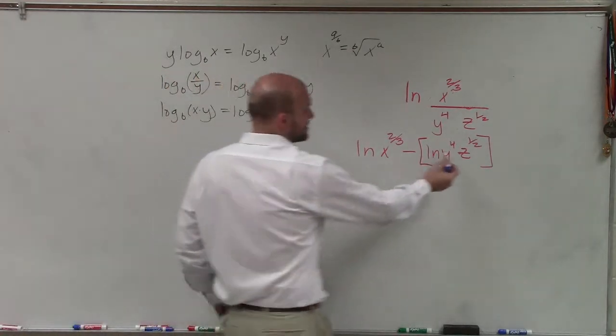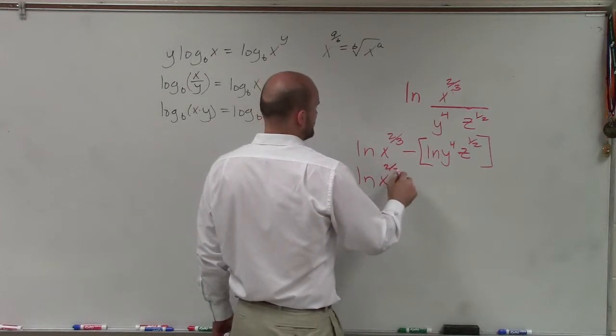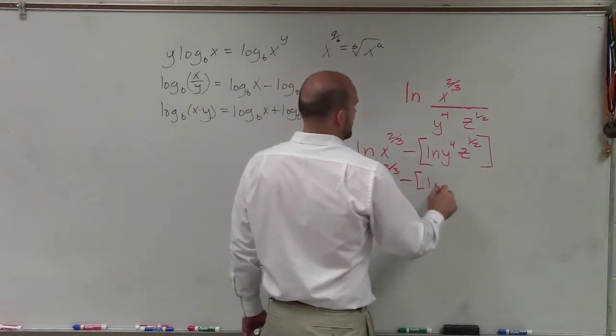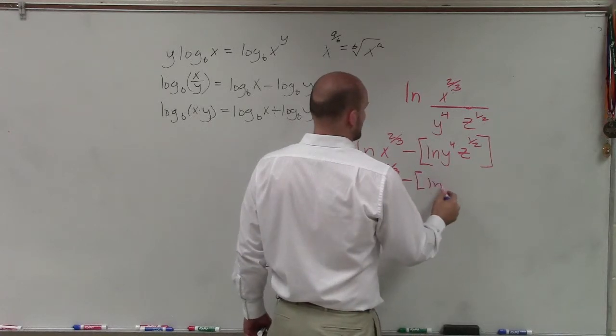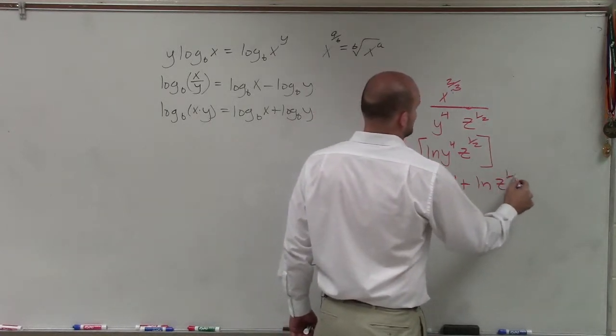ladies and gentlemen, what I'm going to do now is I'm going to break this up by an addition of two logarithms. So it would be ln of x to the 2 thirds minus ln of y to the fourth plus ln of z to the 1 half.